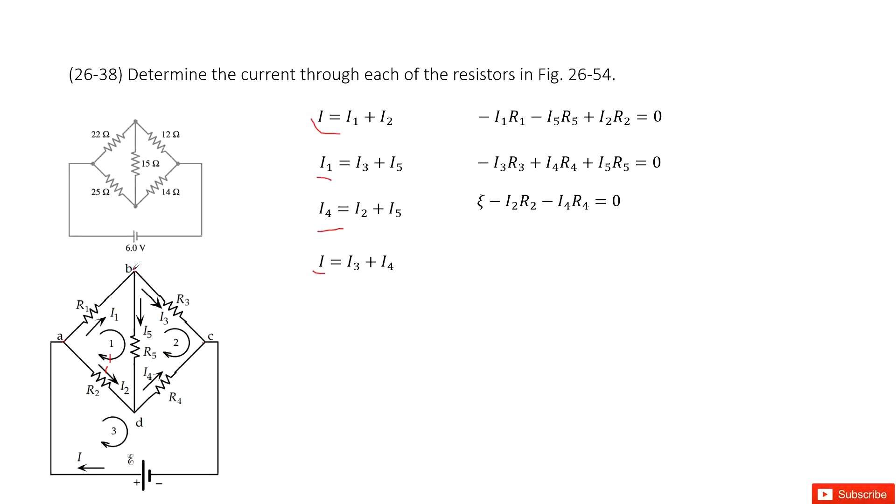Then we look at loop 2. From position B, we can see current goes through R3, voltage decreases, so minus I3 times R3. And then at this direction, you can see the loop's direction is opposite with the current's direction. So this is plus I4 times R4, and then goes through R5, so this is the current's direction, opposite with the loop's direction. So this is plus I5 times R5 equal to zero.